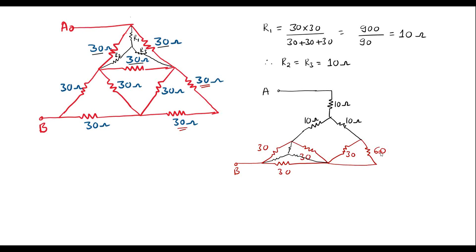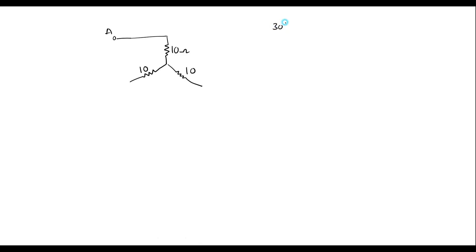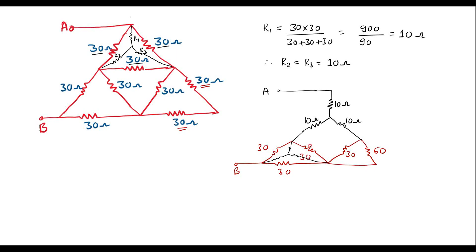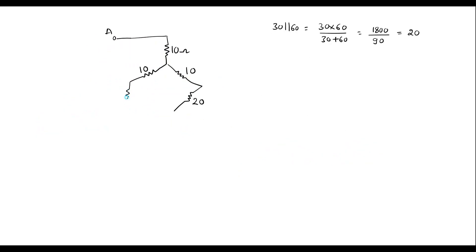Then here we have 30 and 60 in parallel. So I can write 30 parallel with 60. The value of this is 30 into 60 divided by 30 plus 60, that is 1800 divided by 90, which is nothing but 20. So here these two resistors are replaced by a single value of 20. Here the value of this is 30. So we draw a star connected to node B with values of 10, 10, and 10.